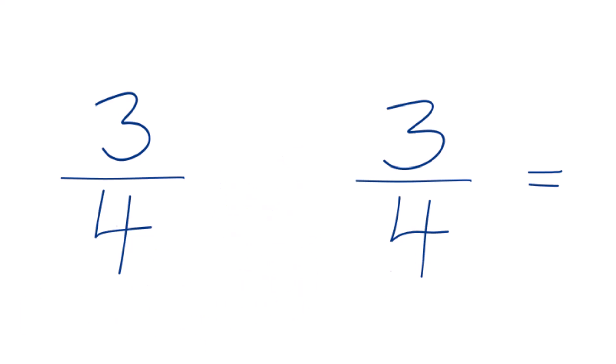We can think of the of as multiplication. We could say 3 fourths times 3 fourths instead of 3 fourths of 3 fourths. That's a little bit easier.